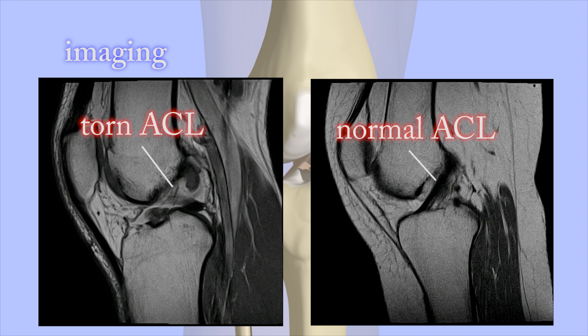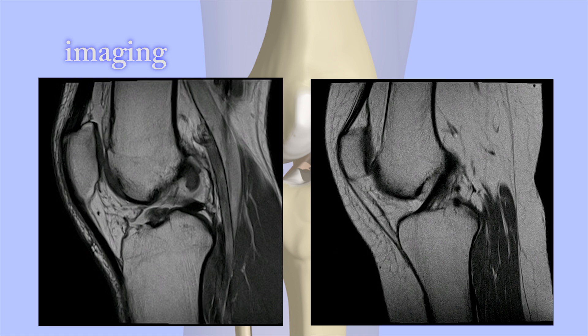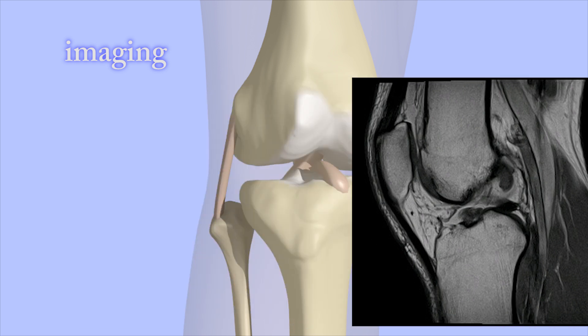Other injuries often occur with the ACL tear, which can be identified on an MRI as well, such as meniscus tears and other ligament tears.